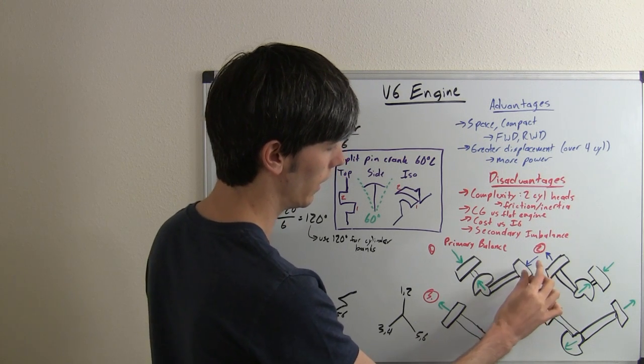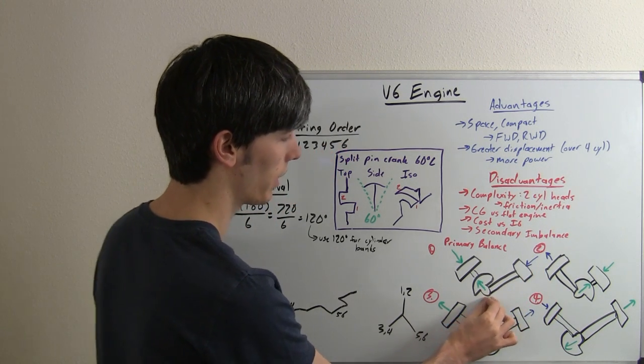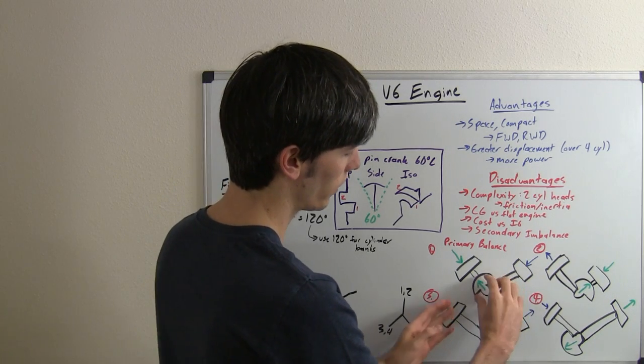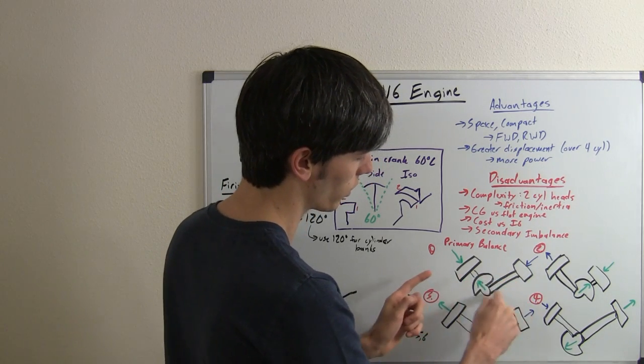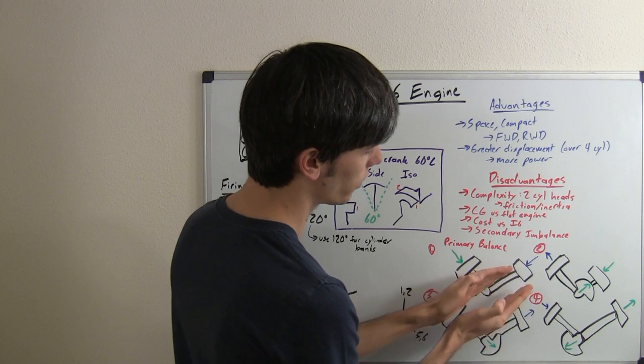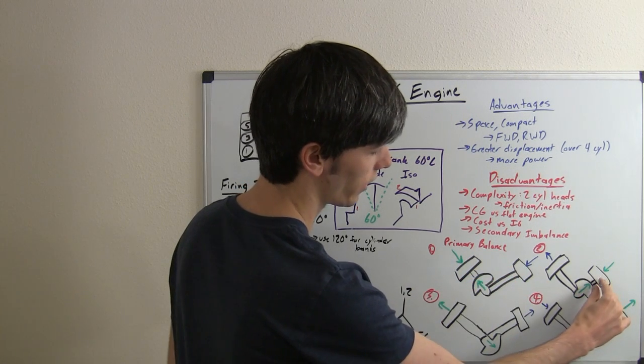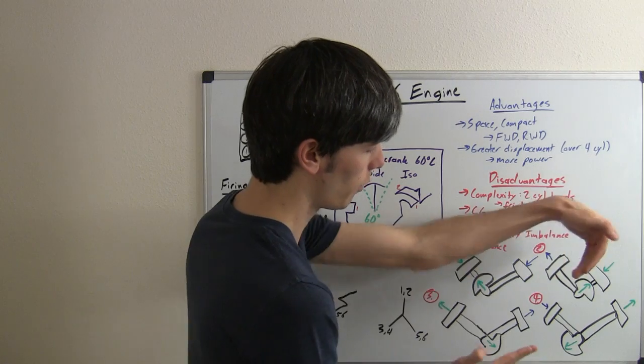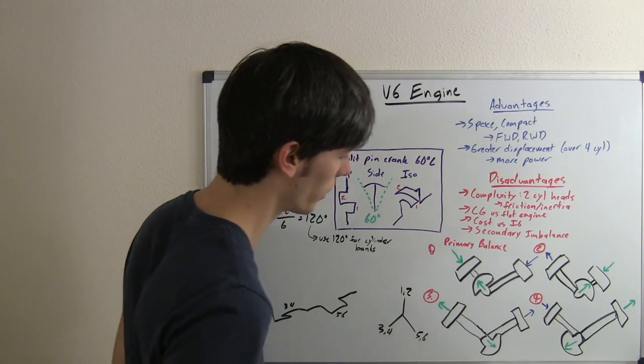Meanwhile, the other piston, which is connected to that common crank pin, is on its way down. So, as this rotates over, this is the direction we're going to be rotating, as this rotates over, this comes down, and as it hits bottom dead center, this counterweight is facing it, and both of those forces cancel each other out.